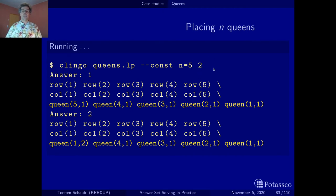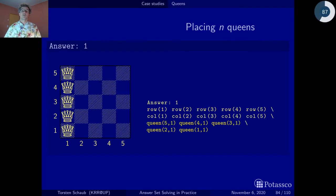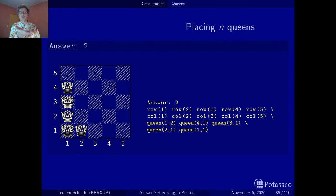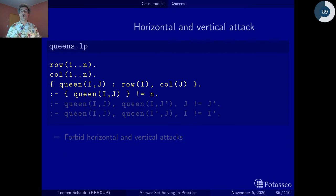With the N queens constraint, Clingo gives solutions that have exactly N queens — but the first solution places all five queens in the first row, and the second has four queens in the first row and one in the second. Many constraints are violated: queens attack each other horizontally. We haven't told Clingo anything about horizontal or vertical attacks yet.